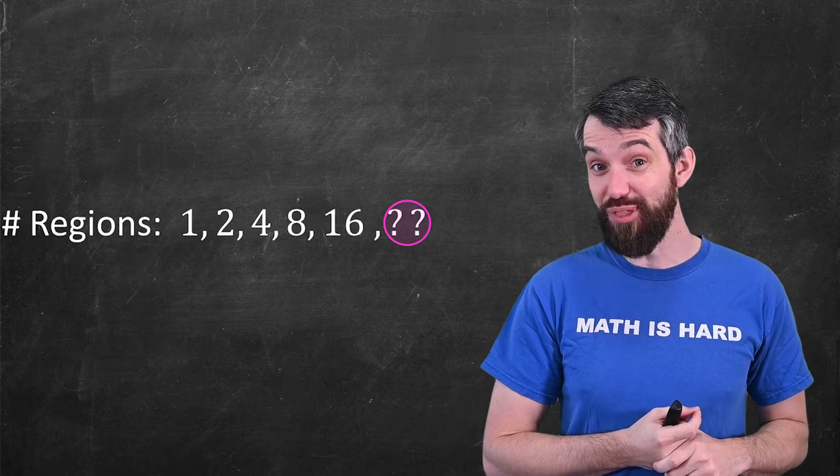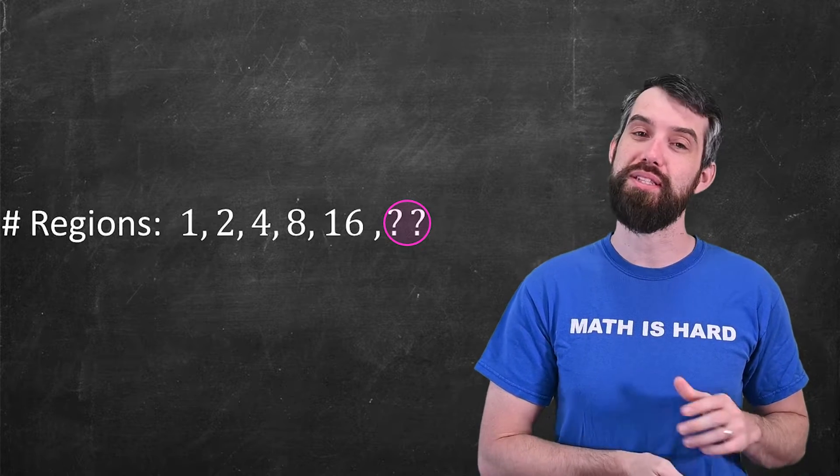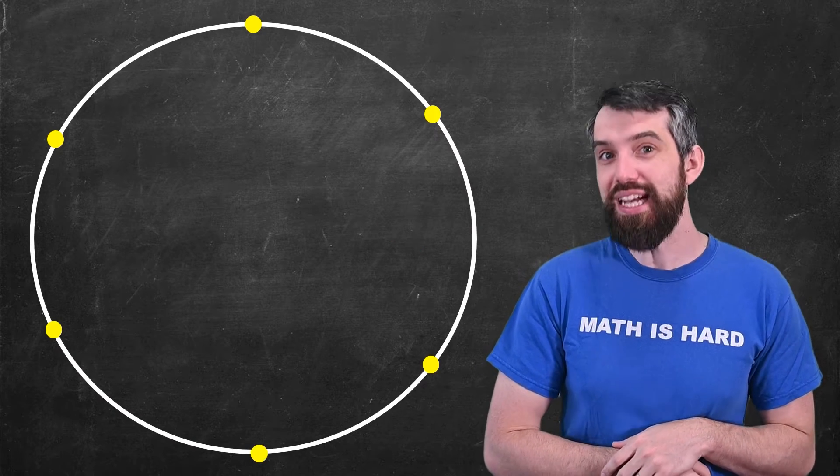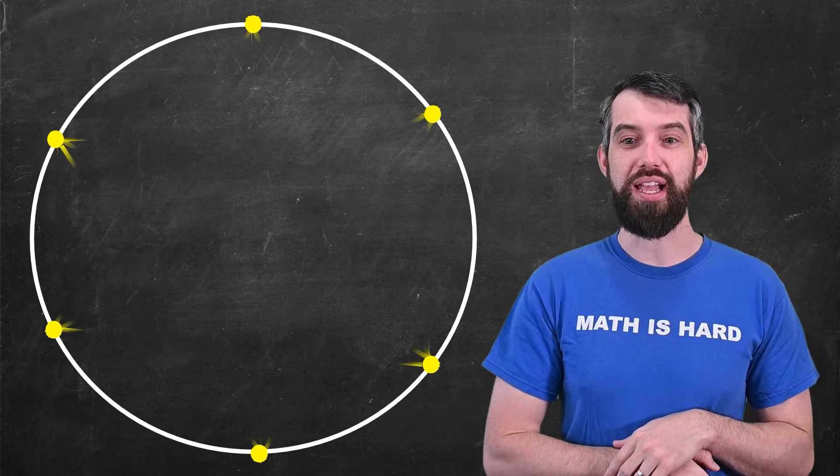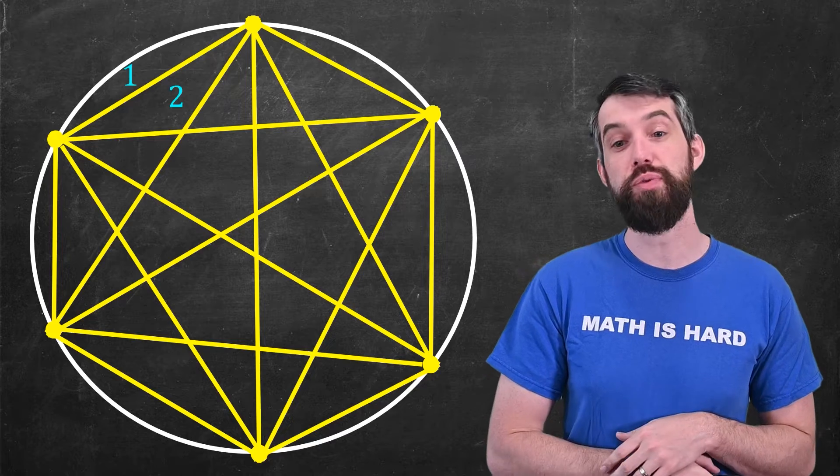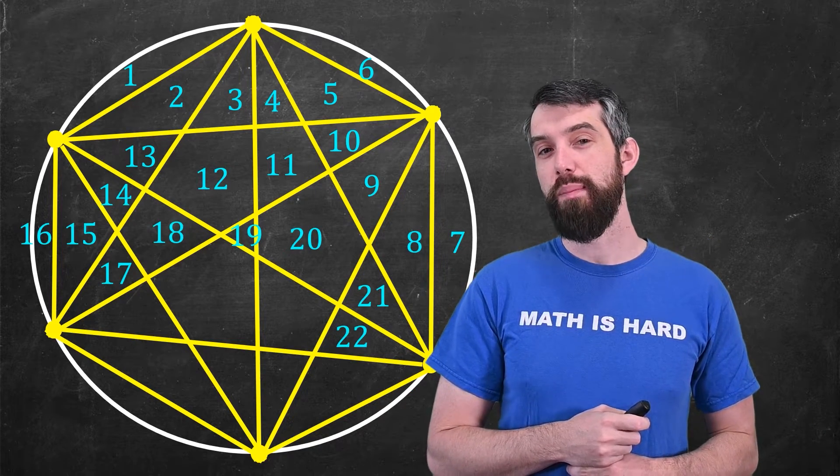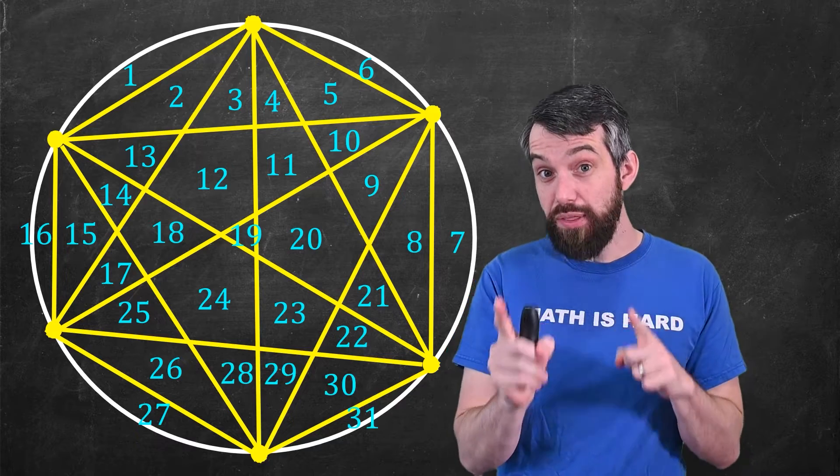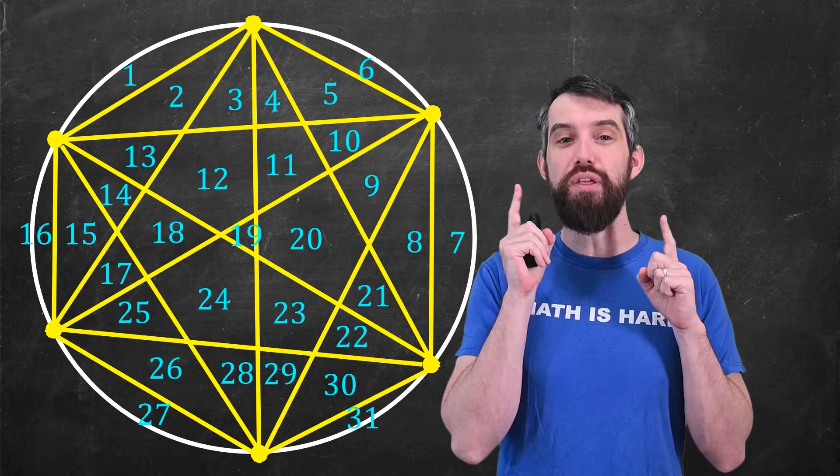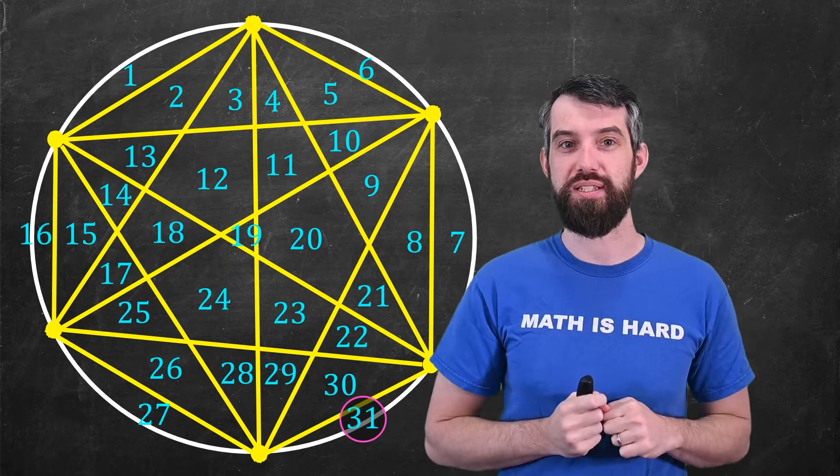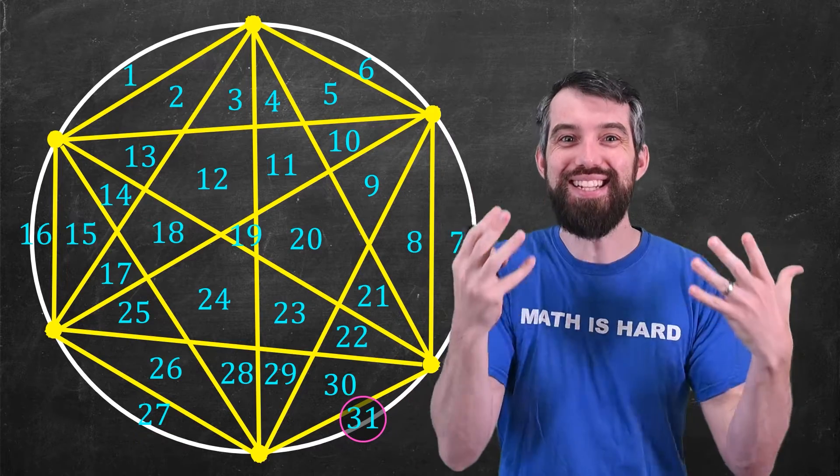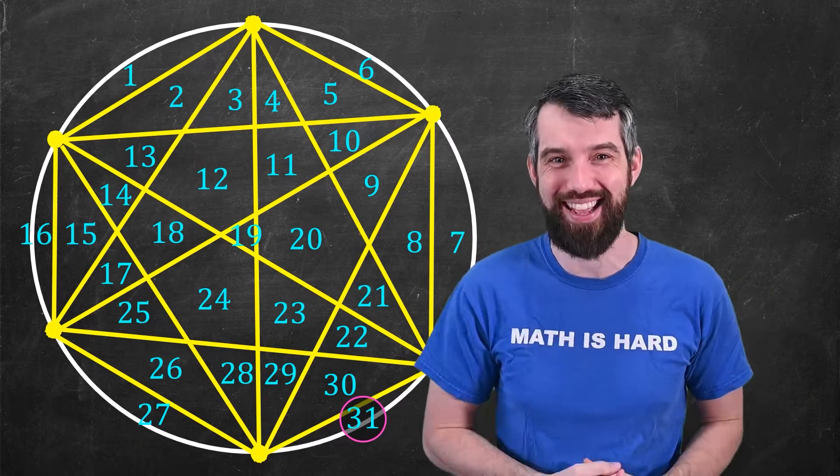I bet you're thinking 32, right? Let's take a look. I'm going to put six dots around the circle. I'm going to connect them all up, and let's just count the regions here. There's a lot of them. It's going to take a moment for us to count. But what we're going to get, you're probably expecting 32. We get only 31 regions. 1, 2, 4, 8, 16, 31. What the heck?